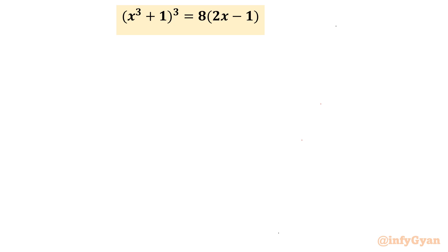Hello everyone. Welcome to Infigyan once again in this very exciting video of algebraic challenging equations, where we will be solving a degree-9 polynomial: (x³ + 1)³ = 8(2x − 1). We have to find 9 solutions, whether real or complex. Let us get started by using substitution.